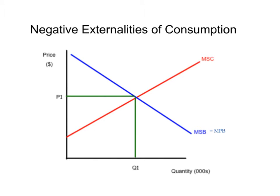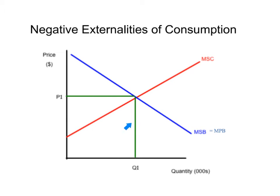The negative externalities of consumption graph is going to start off looking very much like the other market failure externality graphs, in that you're going to have a marginal social cost curve, and underneath that is the marginal private cost curve. We're going to have the marginal social benefit curve, which is also hiding the marginal private benefit curve. We have a market equilibrium of P1Q1, and this would be what the market would look like for whatever product — we're going to talk about cigarettes in this example — if there weren't some sort of externality.